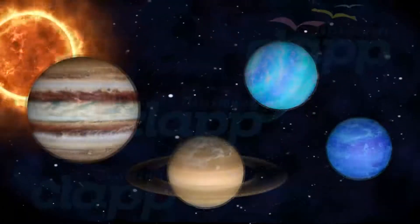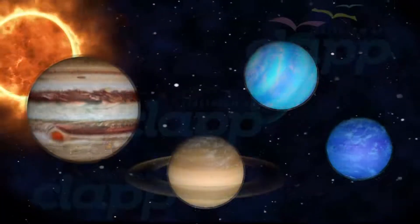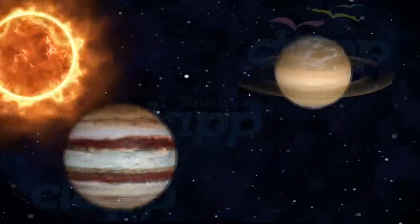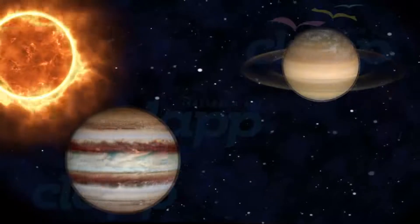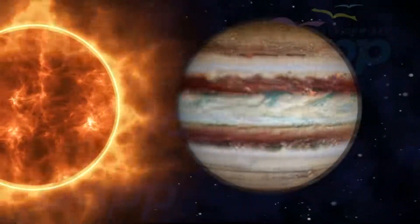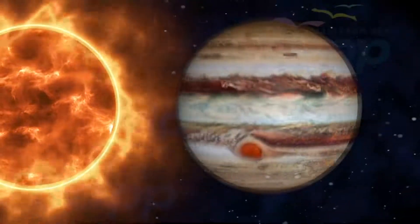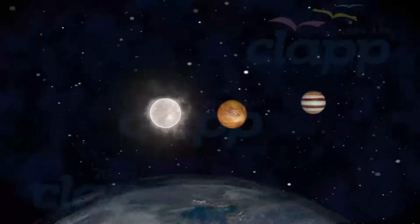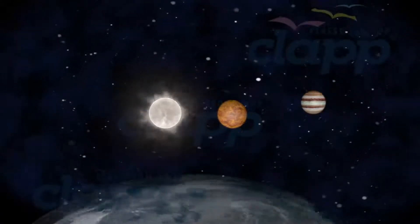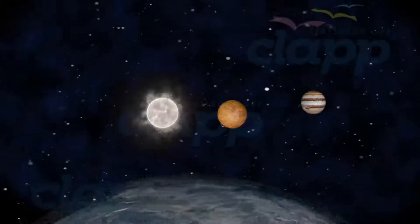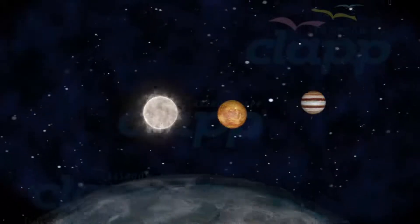Jupiter is one of the four Jovian planets in our solar system and one of the two gas giants. Jupiter is the biggest planet in the solar system. Jupiter is the third brightest natural object in the Earth's night sky after the Moon and Venus.